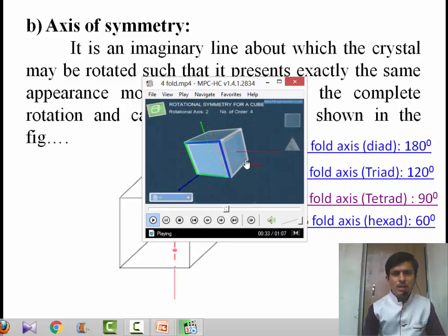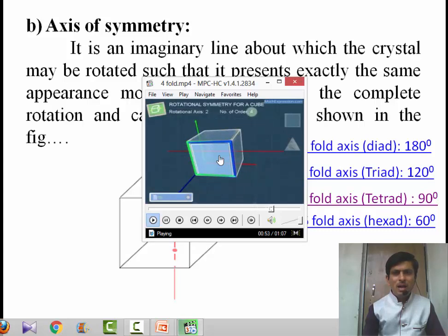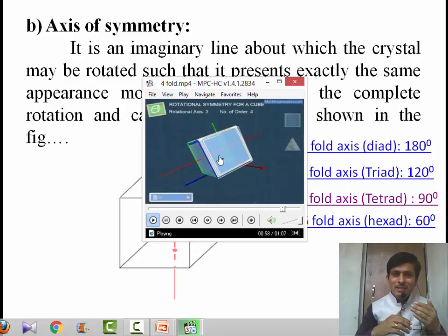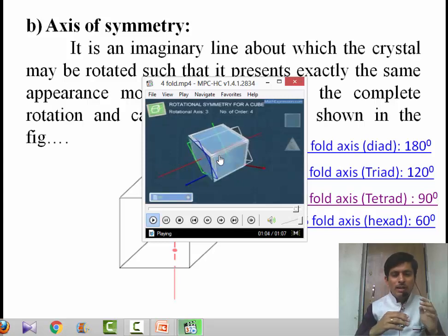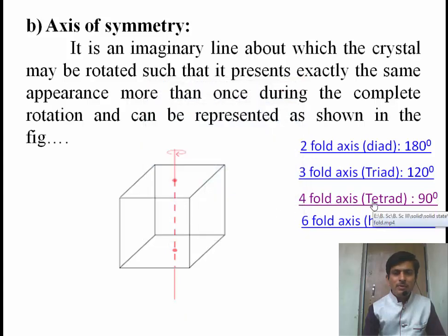Consider another axis passing through opposite faces. The crystal is rotating about this axis — 1, 2, 3, and 4 — so the crystal has a 4-fold axis of symmetry. That means after rotating through each 90 degrees the crystal repeats its same appearance. During 360-degree rotation it shows the same appearance 4 times, so we call it a 4-fold axis of symmetry, also called a tetrad.